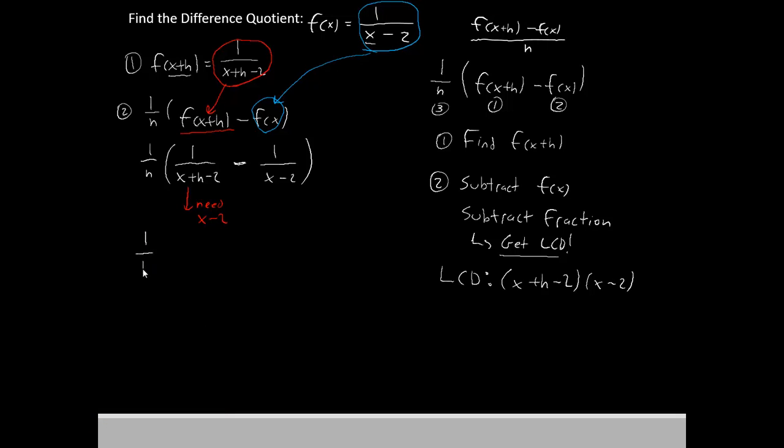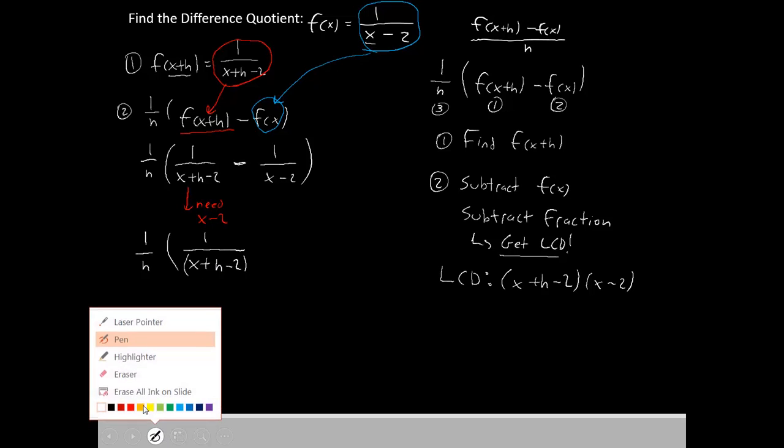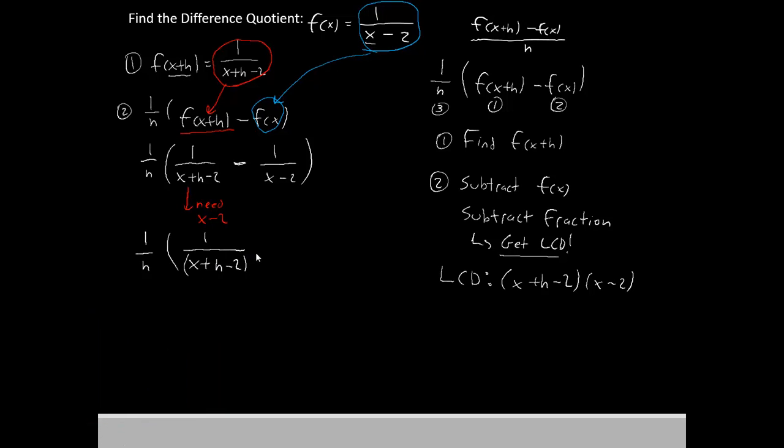We're going to keep the 1 over h on the outside, and we'll have 1 over x plus h minus 2 still. But we have to put in the x minus 2 and multiply that on the top and the bottom. Alright.